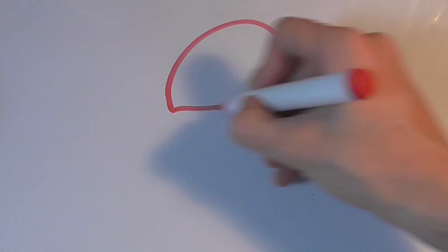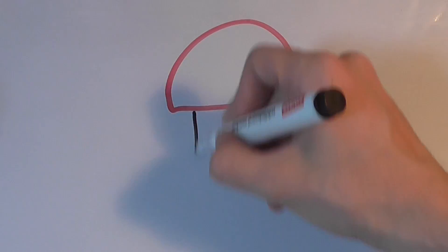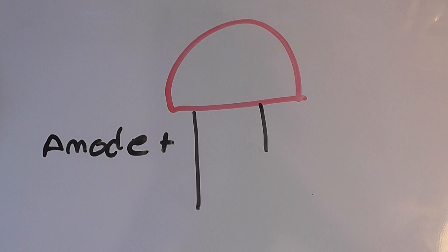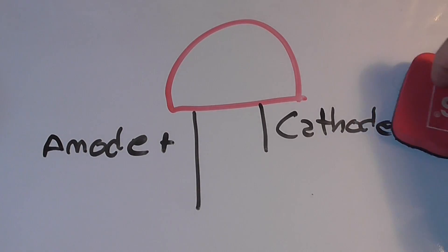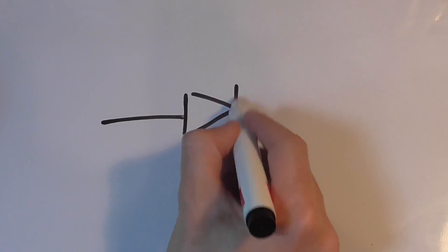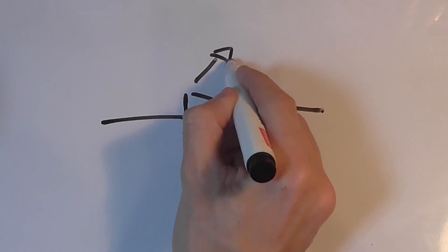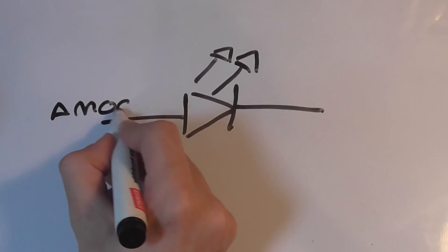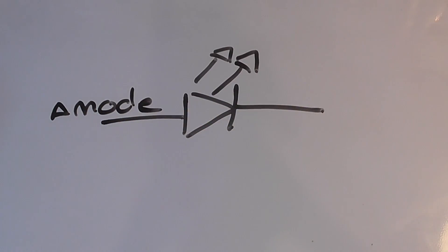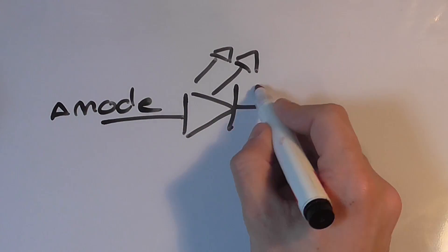A typical LED has two legs: the longer one being the anode or the positive side, and the shorter one being the cathode or the negative. If you look at the schematic symbol of the LED, this is the anode and this is the cathode.